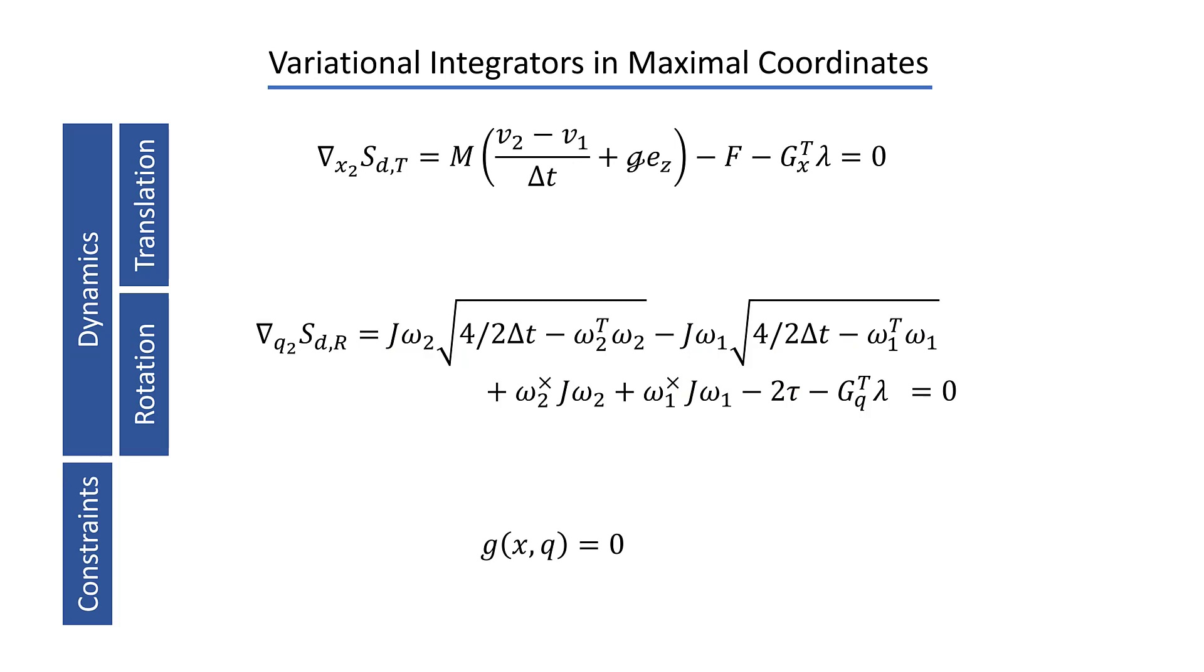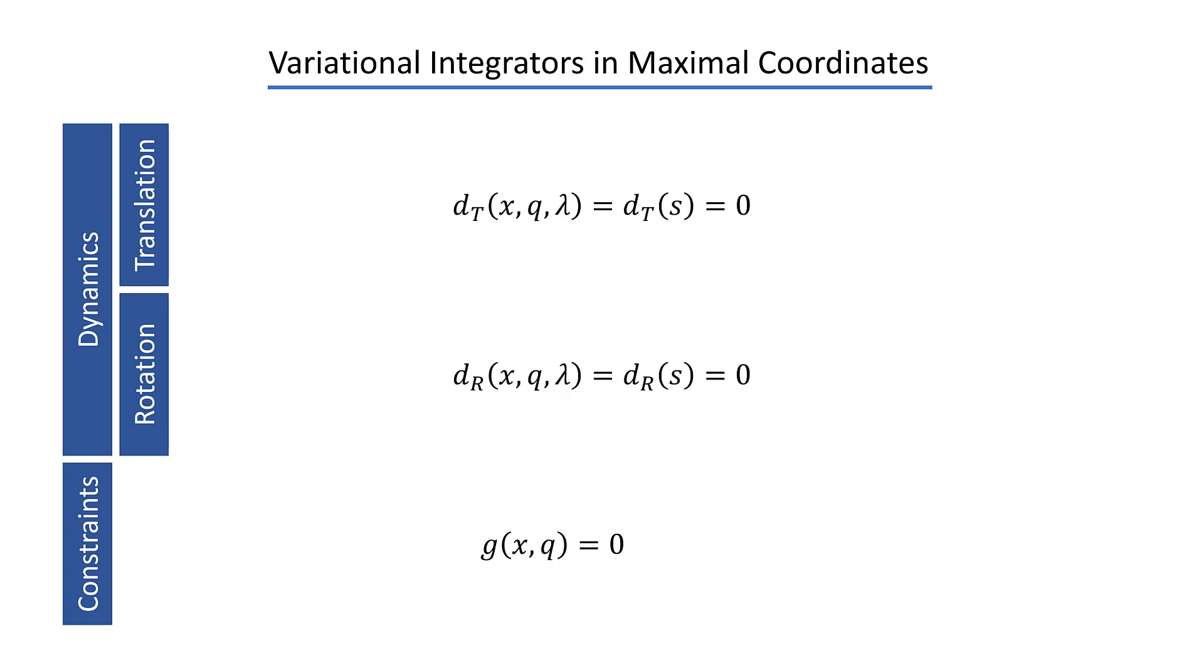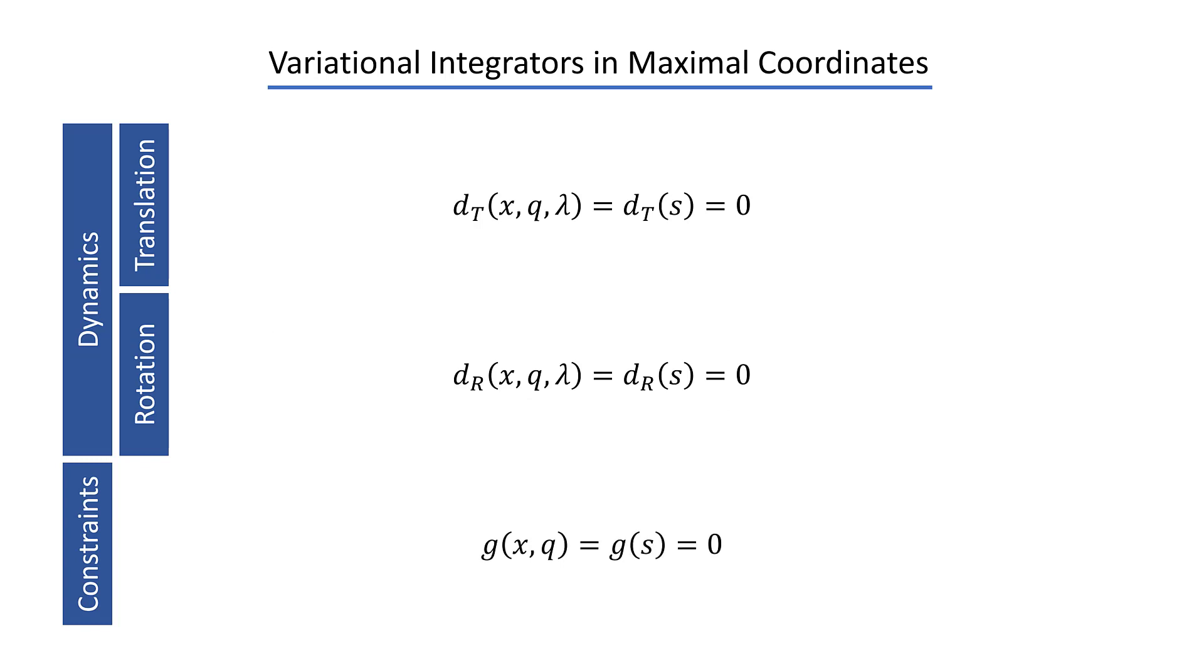We now rename the translational dynamics dt, and we stack our variables into the variable s. Then we do the same for the rotational dynamics, calling them dr, and rename the variable as well. And the constraints are also written in terms of s. And then we stack everything into a function f of s. So if we find a solution to this equation f of s equals zero, then we've successfully integrated our system forward in time using a variational integrator.